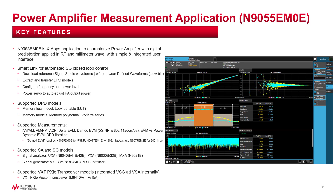It supports several measurements at the same time, such as AM-AM, AM-PM, ACP, Delta EVM, DMOD EVM for standards like 5G New Radio or Wi-Fi 6 and 7, EVM vs Power, Dynamic EVM, and DPD iteration measurement. There are two main PA test solutions based on the N1955 X-App application.